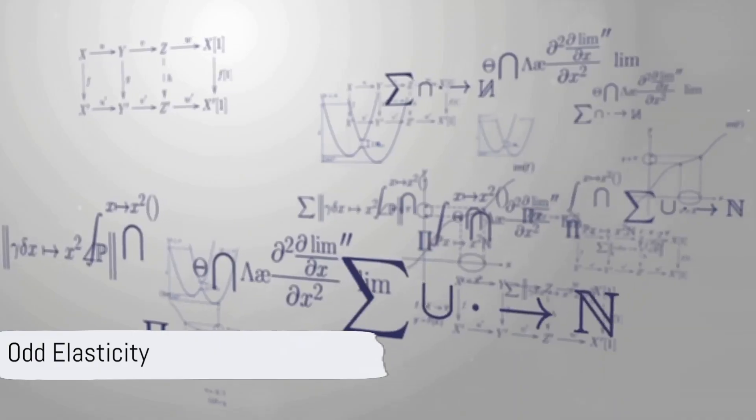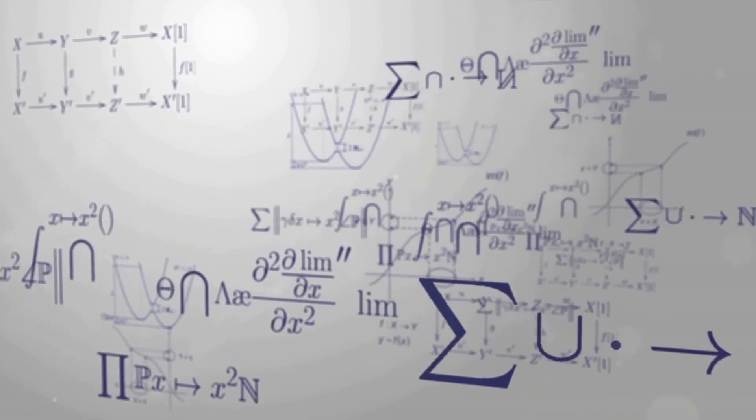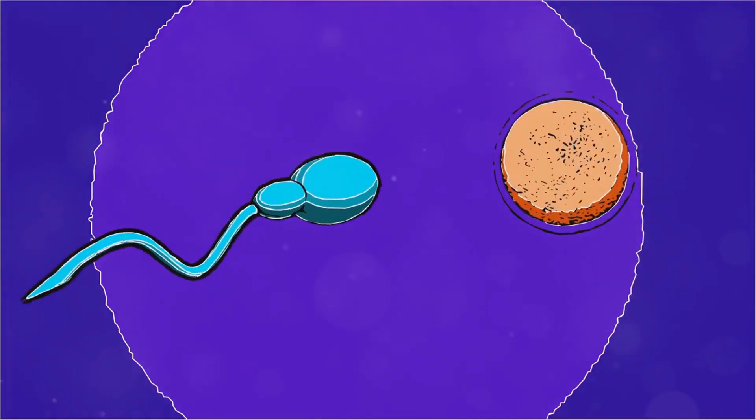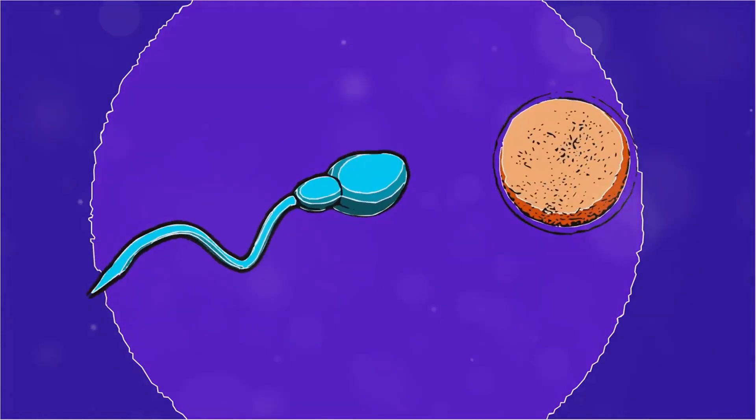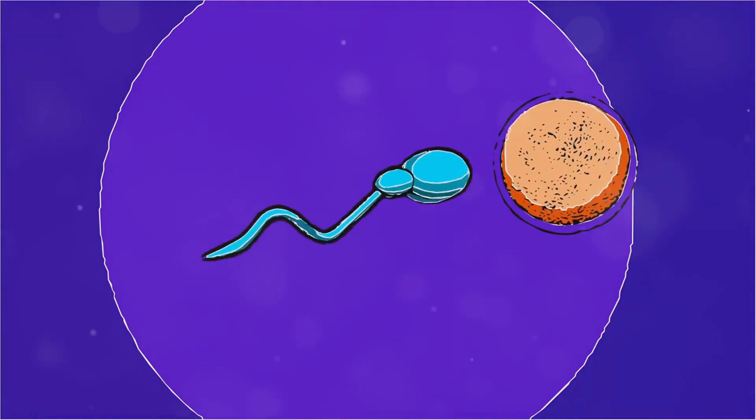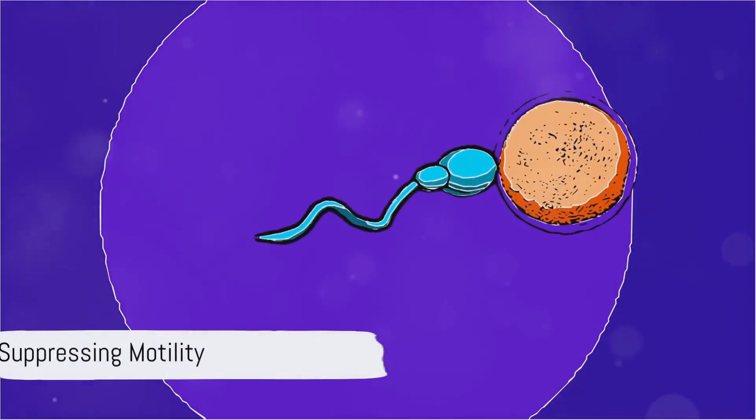Enter the concept of odd elasticity. This peculiar phenomenon doesn't fully explain how the cell moves, but it does allow the cells to wiggle their flagella without expending much energy to their surroundings. If they did, it would suppress their motility.